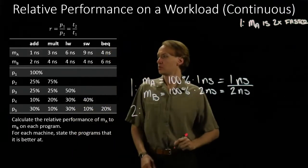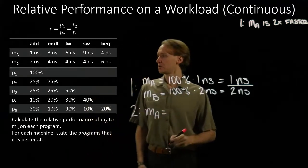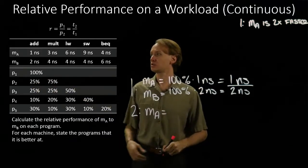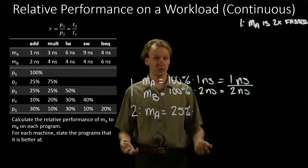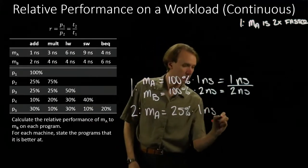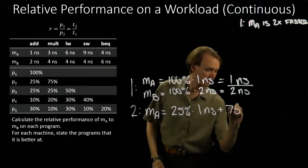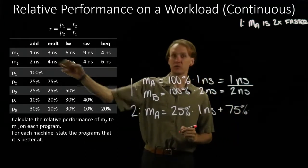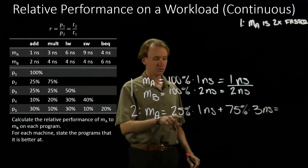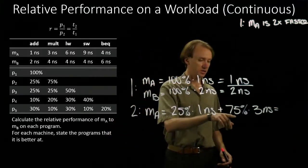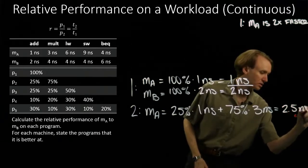On program two, we have a mix of add and multiply instructions. For machine A, 25% of the instructions are addition instructions, each taking one nanosecond. The other 75% are multiply instructions, each taking three nanoseconds. So 0.25 nanoseconds plus 2.25 nanoseconds equals 2.5 nanoseconds on average.